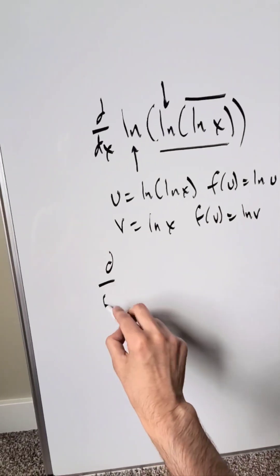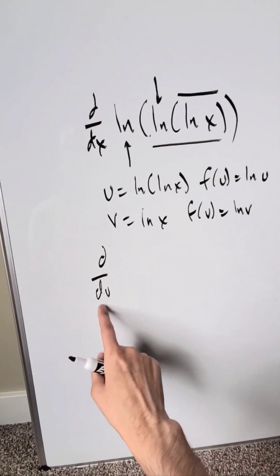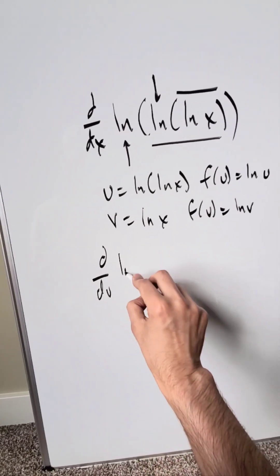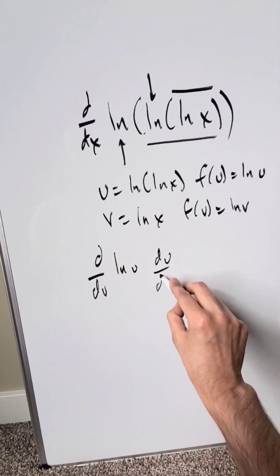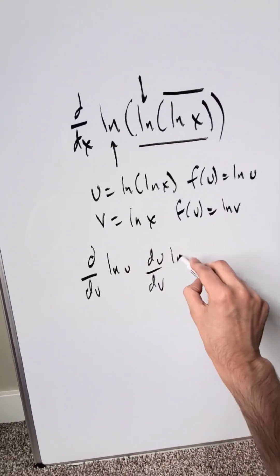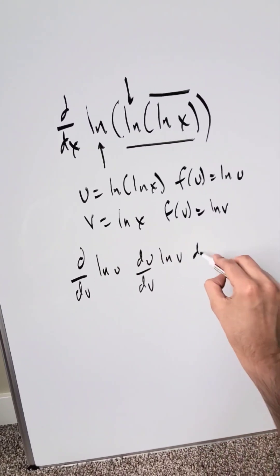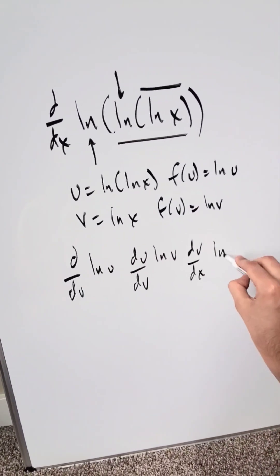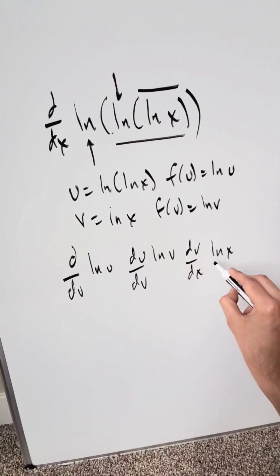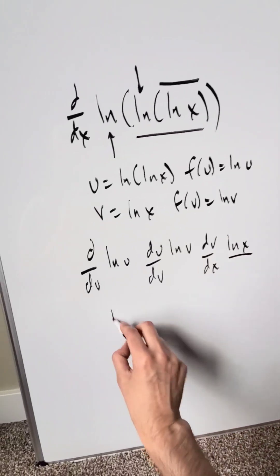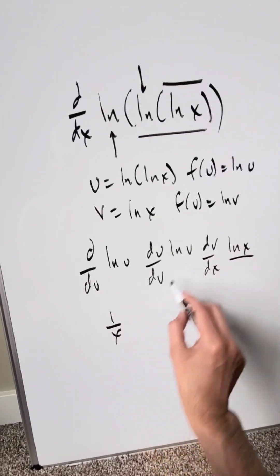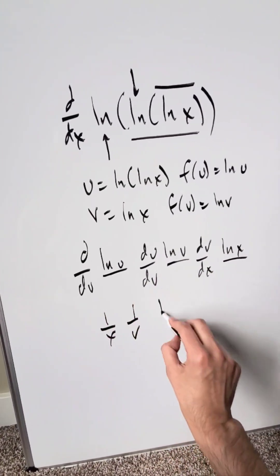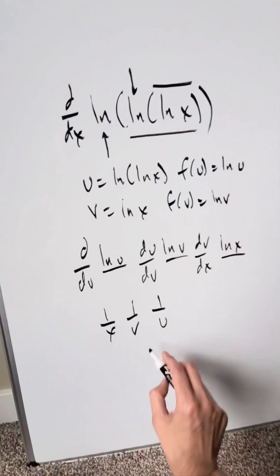Do your chain rule depiction here. The derivative with respect to u of ln(u), times the derivative with respect to the v variable of ln(v), times the derivative with respect to the x variable of ln(x). The derivative of ln(x) is 1 over x. The derivative of ln(v) is 1 over v. And the derivative of ln(u) is 1 over u.